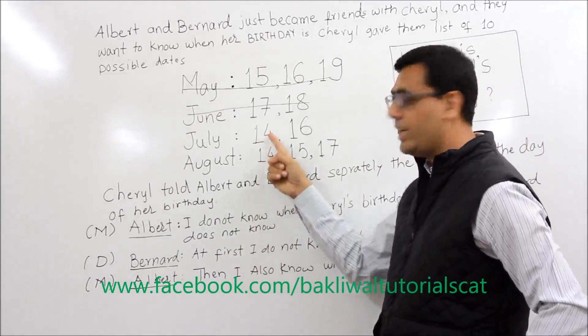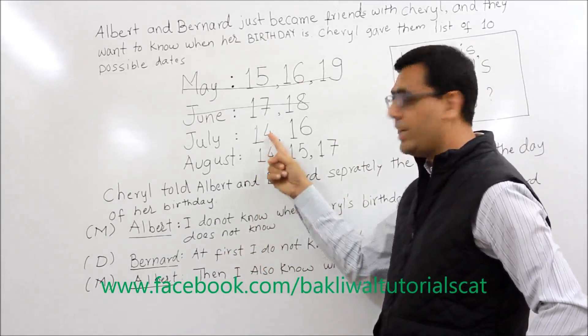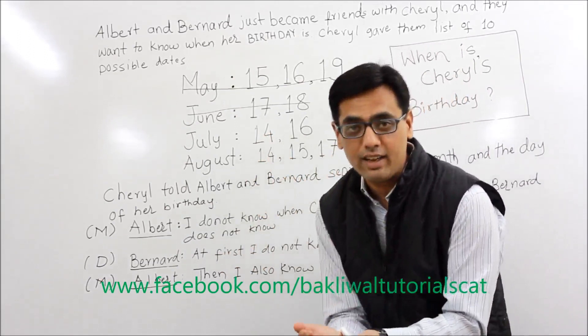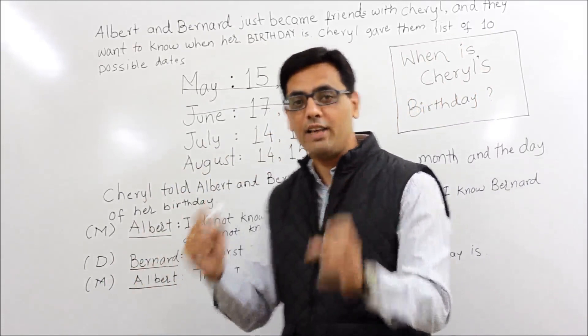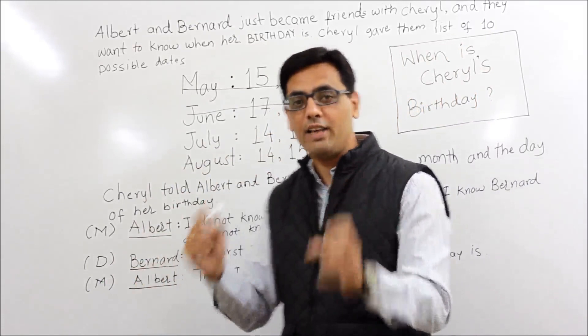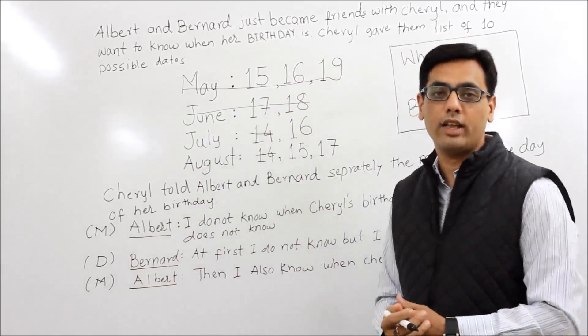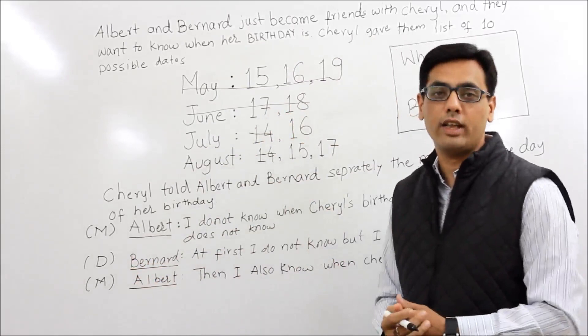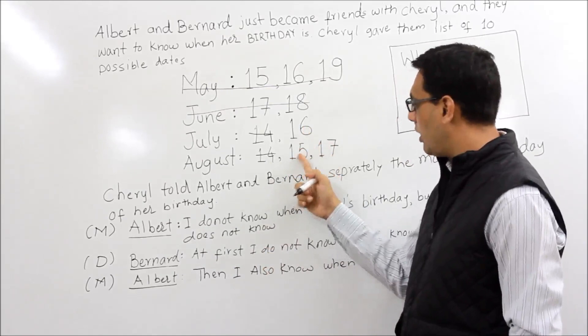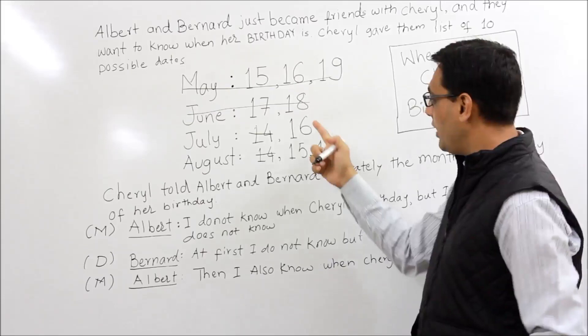The moment Bernard says 'I know now,' it is very clear that 14 is not the answer. Because had he been given 14, he would not be able to say that — since 14 is common in both July and August. So the moment Bernard says he now knows, it clearly means that July 14 and August 14 are ruled out. So until now, the remaining answers are either 16th July, 15th August, or 17th August. As outsiders we cannot yet tell which one it is, but Bernard knows because he has the date.